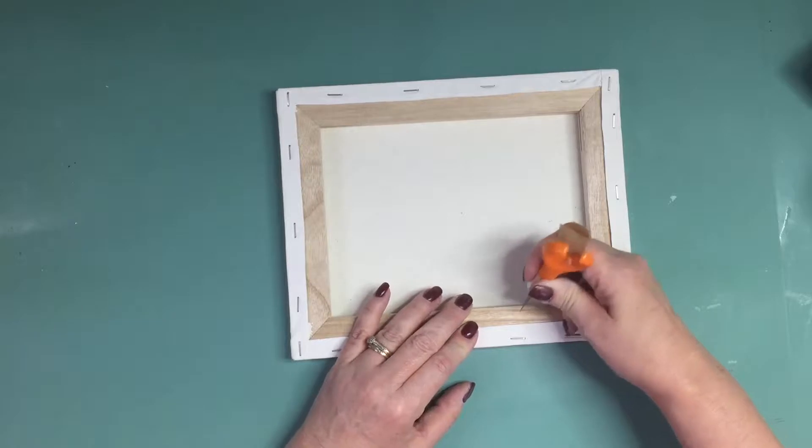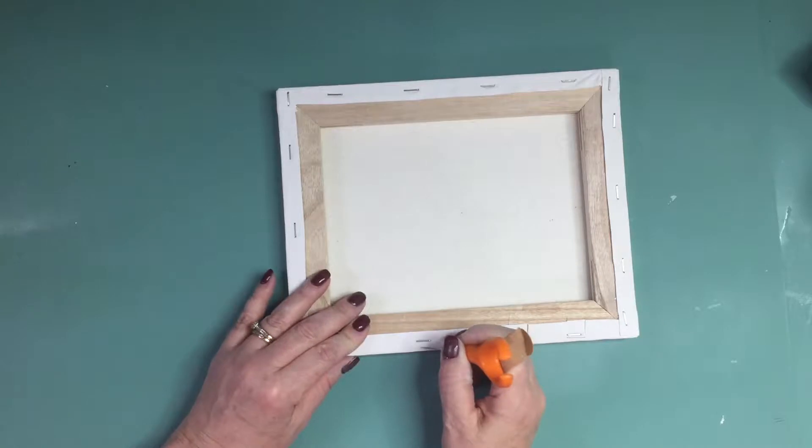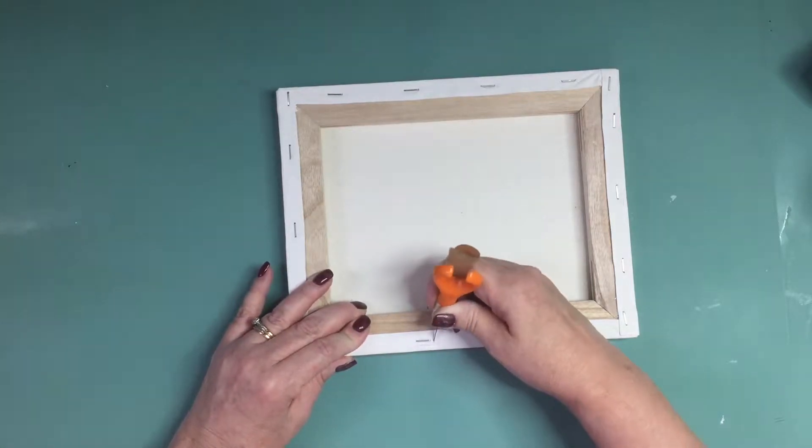You can use an exacto knife, you can run straight along the edge, or you can do like I'm doing here and just cut around the staple.